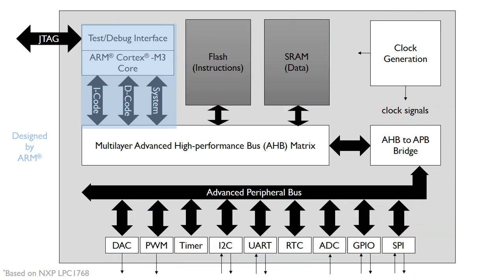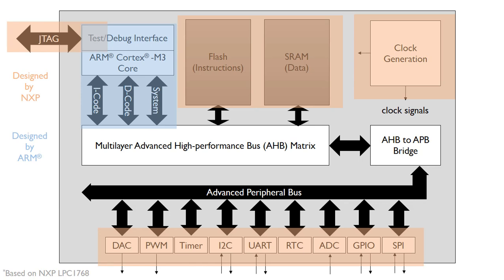The core is essentially the thing designed by ARM, and then a company like NXP would essentially buy the IP for that core design. NXP would then design the memory — so the flash and the RAM — the clock generation, the peripherals, and the JTAG, which is how we load the code and do debugging. So these are the things designed by NXP.